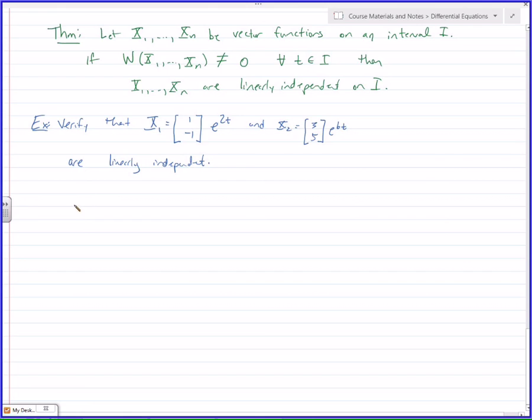So what does the Wronskian then look like? We need e to the 2t, negative e to the 2t, 3e to the 6t, 5e to the 6t. We're just multiplying this in component-wise. And now we take that determinant, forward minus back diagonal. There should not be a minus right there. It should be just e to the 2t. So now I've got 5e to the 8t minus a minus 3e to the 8t, or 8e to the 8t.